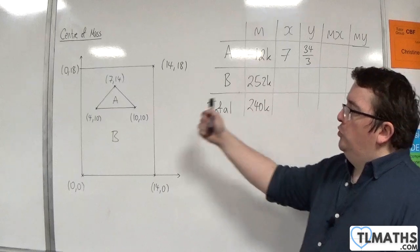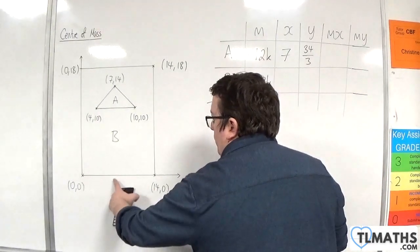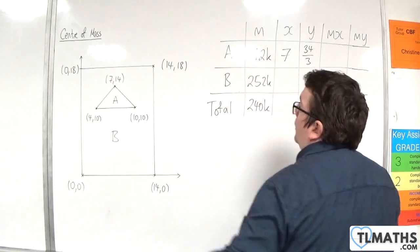As for shape B, the centre of mass will be halfway along there, so 7, and halfway up, so 9.